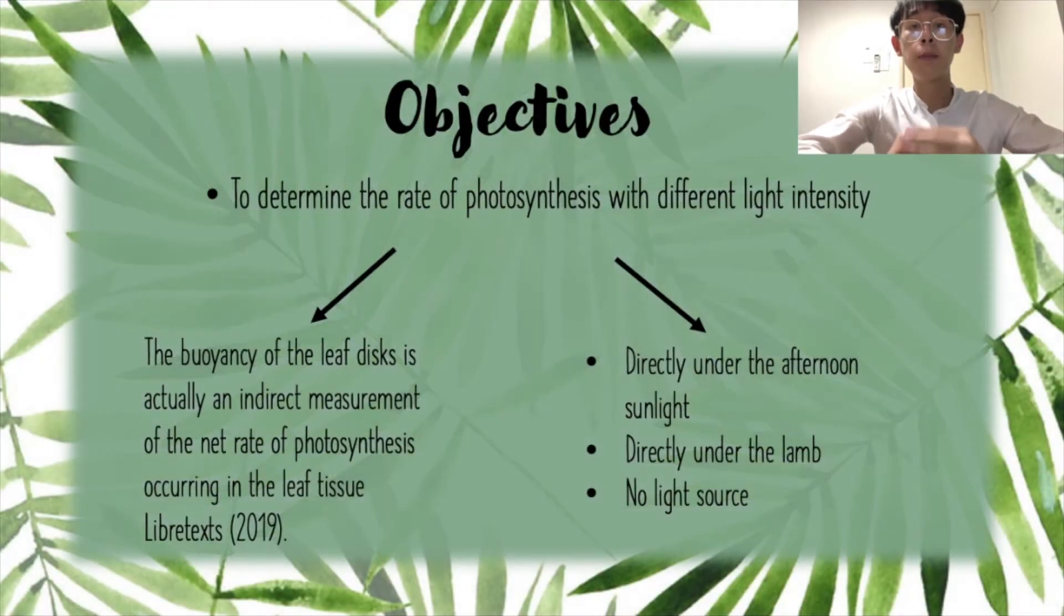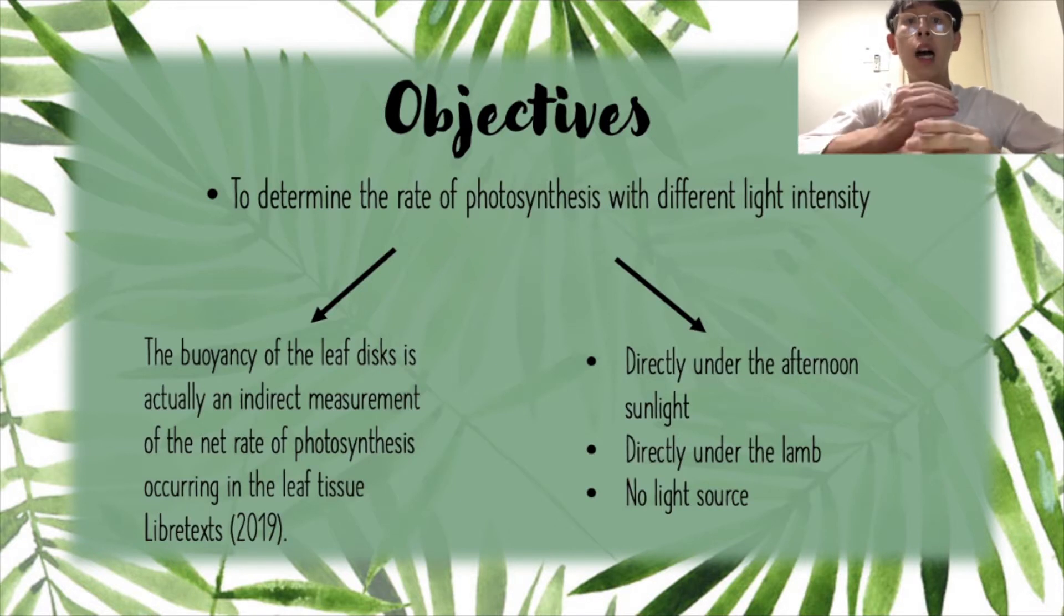Objectives: The objective in this experiment is to determine the rate of photosynthesis with different light intensity. How can we determine the rate of photosynthesis in this experiment? We can determine it by observing the number of leaf disks floating in 2 minutes time intervals. It is because the buoyancy of the leaf is actually an indirect measurement of the net rate of photosynthesis occurring in the leaf tissues.